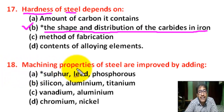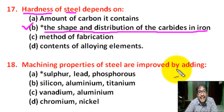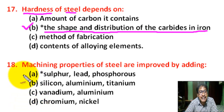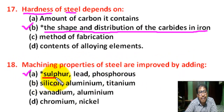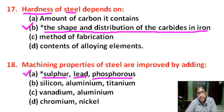Question number eighteen: machining properties of steel are improved by adding — correct answer is A — machining properties of steel are improved by adding sulfur, lead, and phosphorus.